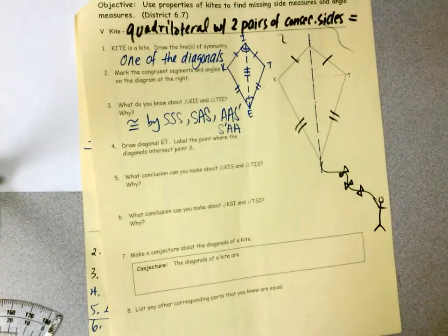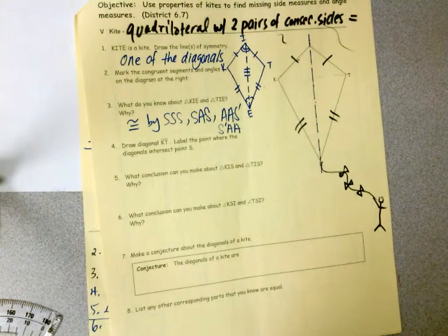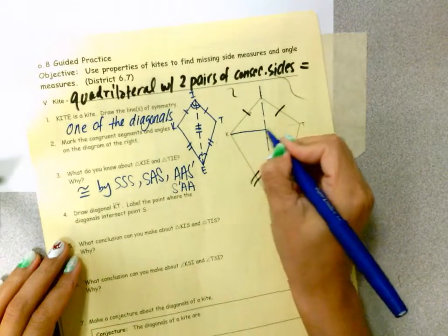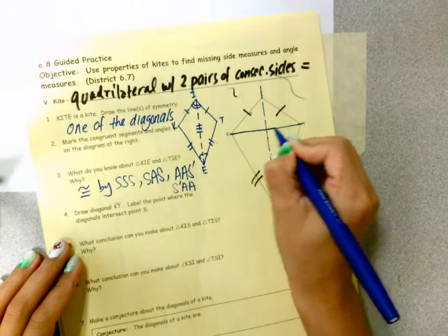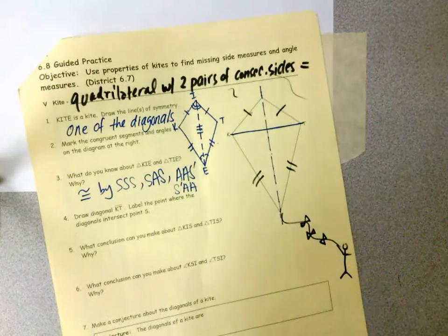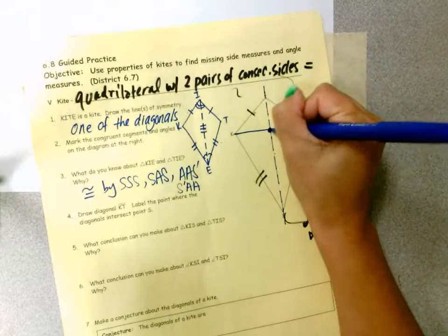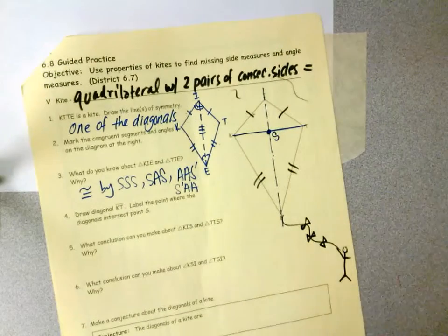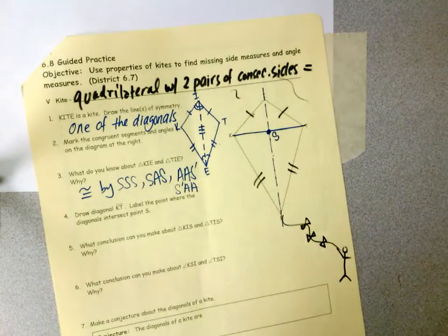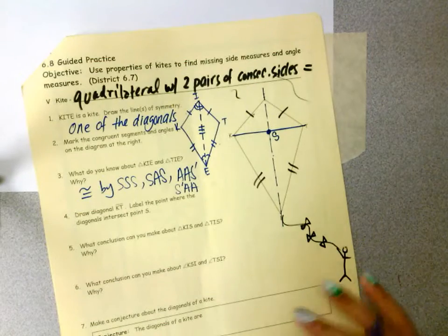Alright, so next one. Draw a diagonal K-T. So now I'm going to draw this diagonal. Label the point where the diagonals meet as S. So this one is S. Okay, so we did that.